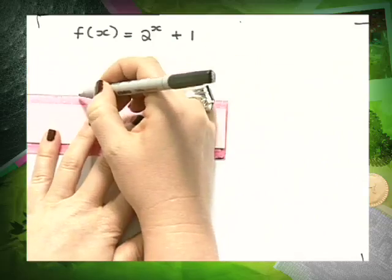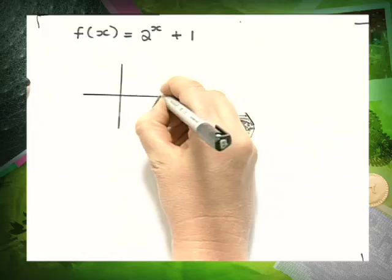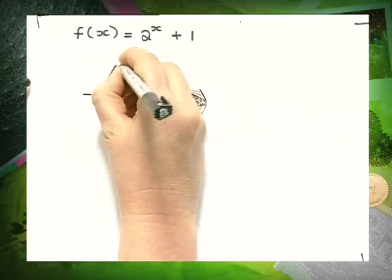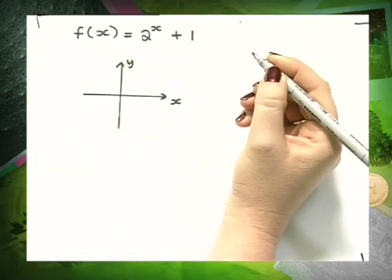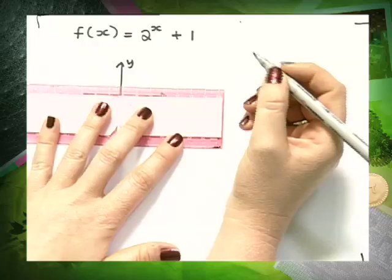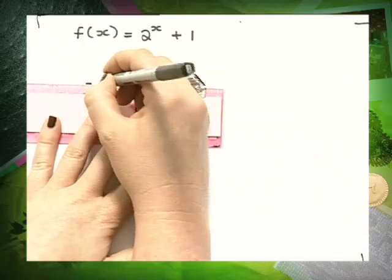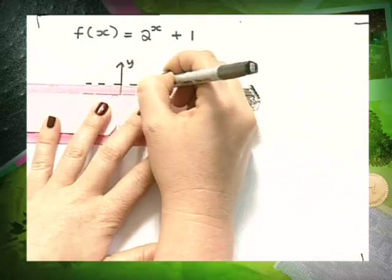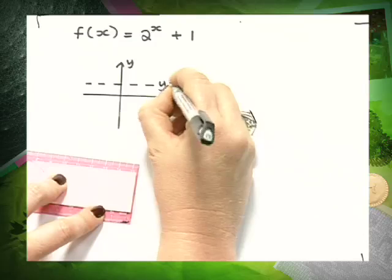Your diagrams do not have to be huge, and they do not have to be to scale. Remember to indicate your horizontal asymptote with a dashed line. y equals 1.